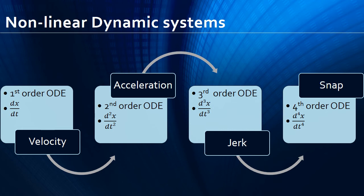And the next higher order derivative is called snap. The terms jerk and snap are less commonly used terms even by most physicists and engineers. Mathematically, jerk is the third derivative of the position of X with respect to time, followed by snap which is the fourth derivative of X with respect to time. Jerk is experienced as a change in force exerted on the body.